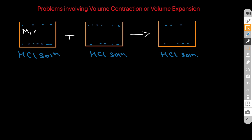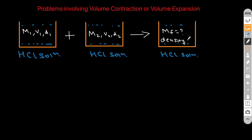The molarity, volume, and density for the solution in container one are m1, v1, d1. For container two they are m2, v2, d2. For the final container we have to find the molarity, and the density is d. You might think the final volume is v1 plus v2, but that is absolutely wrong — that is exactly why we are discussing volume contraction or volume expansion.